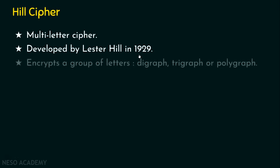The best part of Hill Cipher is it can encrypt a group of letters — a digraph, trigraph, or polygraph — meaning it can encrypt two, three, or multiple letters at a time based on the key value. The key is a square matrix. If the key is a 2×2 matrix, two plaintext letters can be encrypted at a time. If the key matrix is a 3×3 matrix, three plaintext letters can be encrypted at the same time.